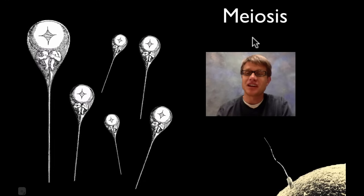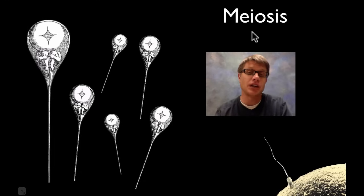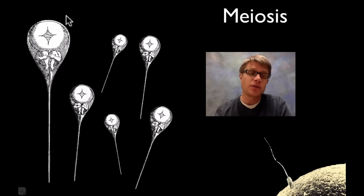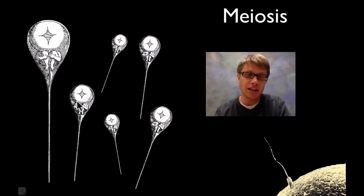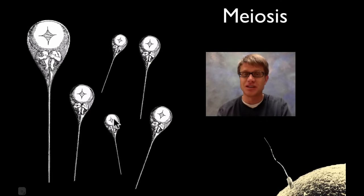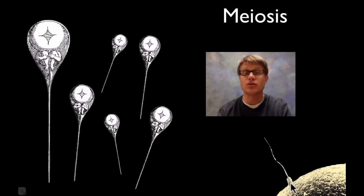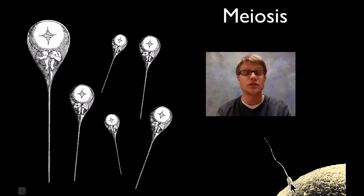Hi, it's Mr. Andersen and today I'm going to talk about meiosis. Meiosis is the process by which gametes are formed — in humans that's sperm and egg. When the first microscopes were made, people looked at sperm and assumed there were tiny little humans tucked away in the head of each sperm. We know that's ridiculous. What's really tucked away is nuclear material, or chromosomes, that are transferred from males to females.